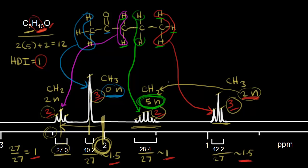Let's verify the red protons: they should have two neighbors — here's one and here's two, so that makes sense. The magenta protons should also have two neighbors. Looking at the next-door carbon, here's one neighbor and here's another — that makes sense too. And the blue protons have zero neighbors, as we already discussed. Everything seems to make sense.